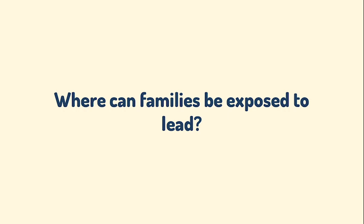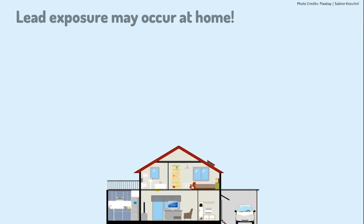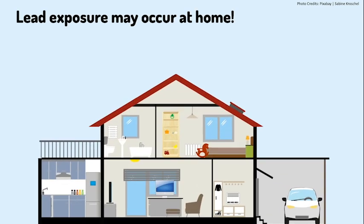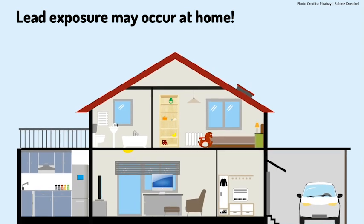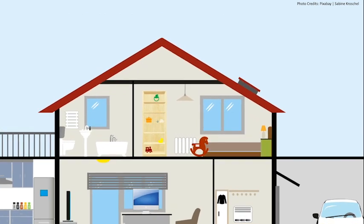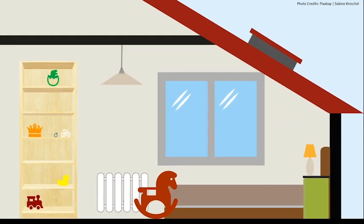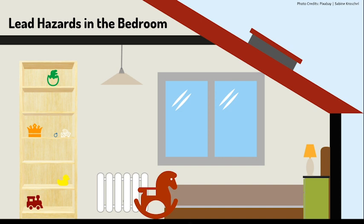Now we will further explore places within the household where people can be exposed to lead. There is a cross-sectional view of a two-story house. A bedroom and a bathroom are upstairs, and a living room, kitchen, and garage are downstairs. Lead in paint was officially banned in 1978, so let's say this house was built in 1975. It is important to understand possible lead exposure risks — you may visit or eventually buy an older house built before 1978. During this tour, we will go from room to room identifying common sources of lead exposure. Children younger than six years old are at a higher risk for negative effects from lead.